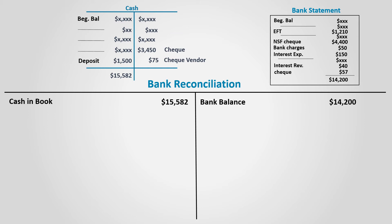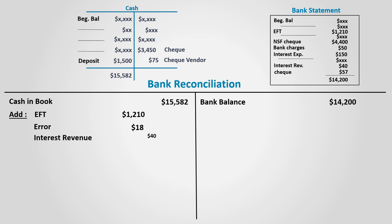On the book's side, we will add the following items to the cash balance. EFT is added to the cash account as the amount has been directly received by the bank but not recorded in the books. The error results in adding $18, because when the check was issued it was recorded for $75 while it should have been $57 only — there is an excess deduction of $18 which is now added back. Interest revenue is also added, since it was not previously added to the cash account.